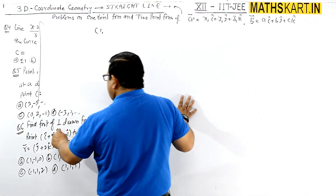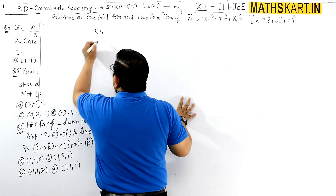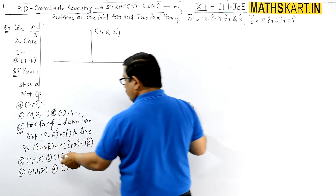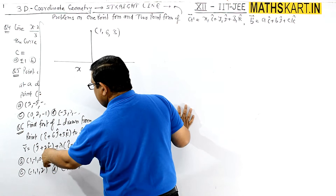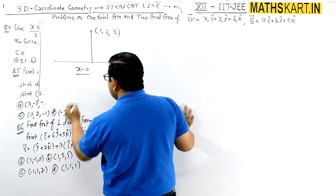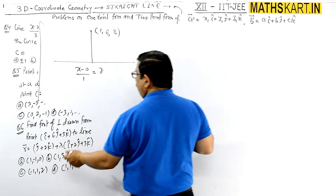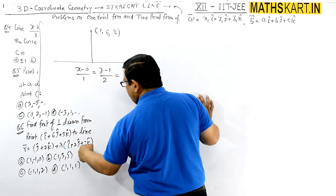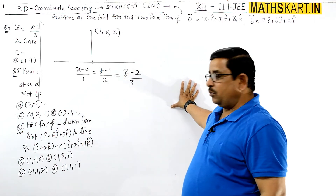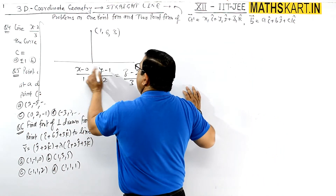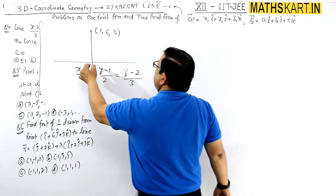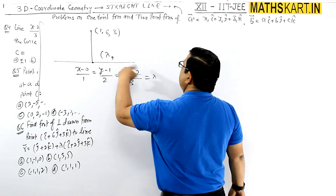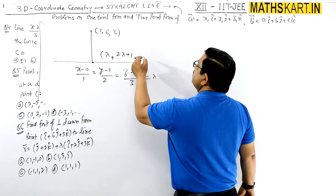This line's equation is given, and we need to find the foot of the perpendicular. So the given point, which we write as (1, 6, 3), and the line equation converted to Cartesian form becomes: x minus 1 by 1 equals y minus 1 by 2 equals z minus 2 by 3, where (1,1,2) is the point on the line and (1,2,3) are the direction ratios. Now, taking a general point on the line with parameter lambda: x = lambda + 1, y = 2 lambda + 1, z = 3 lambda + 2.